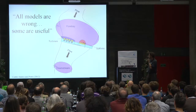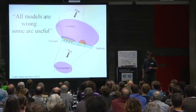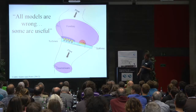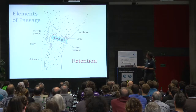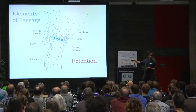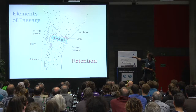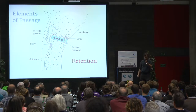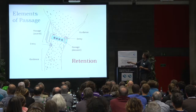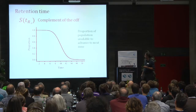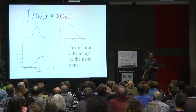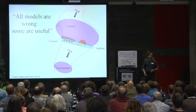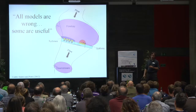Everything I describe for a fish moving upstream is also true for a fish moving downstream — they have to approach the entrance, locate it, actually enter, and then passage through descent. In terms of passage success or failure, there are exactly six ways in which failure can occur. The only way to pass is if both the forward and departure rates occur at a rate that is optimal for passage. So there's really only one way to get the fish through these structures, and that's why it's hard.